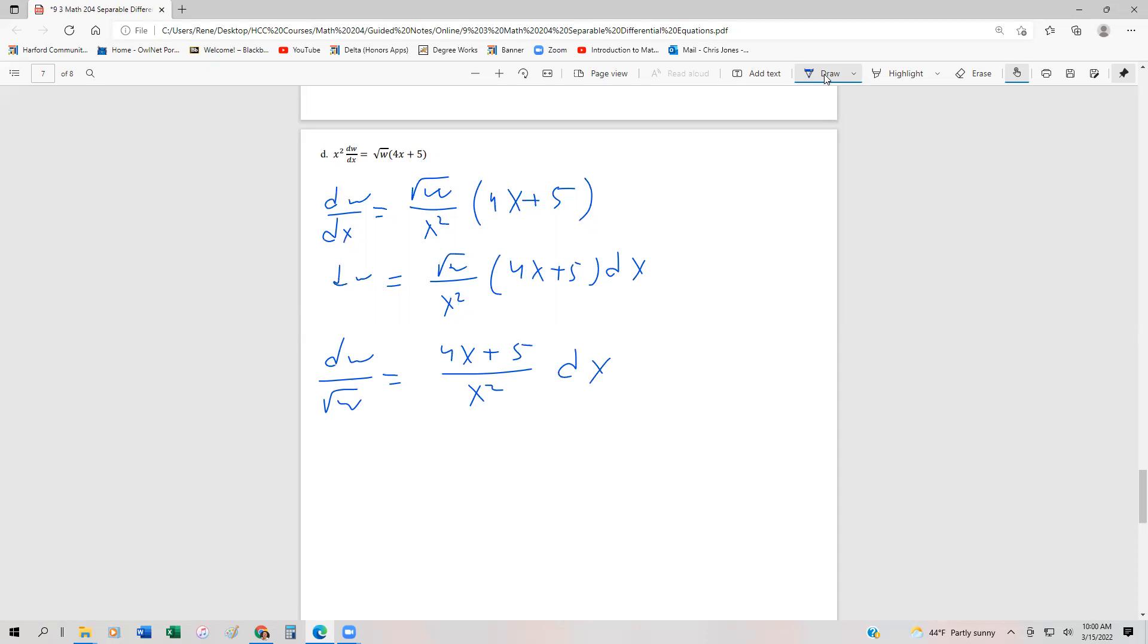Now we have to prepare this for integration. The left-hand side is pretty easy - we can rewrite that as w to the minus one half dw. On the right-hand side, what I'm going to do is split this up into two fractions because I'm dividing by a monomial.